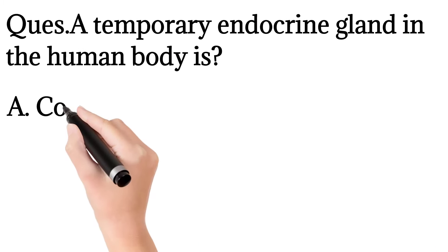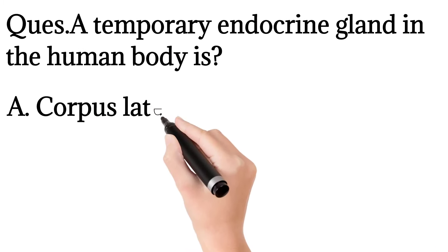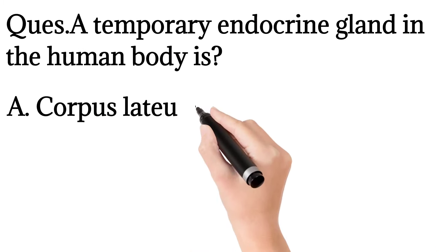7. A temporary endocrine gland in the human body is: corpus latium, corpus luteum, corpus allitum, or pineal gland.